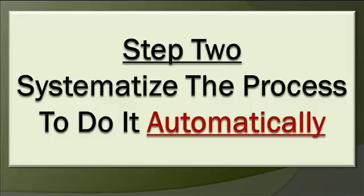This automation, this systemization, is what I call the push button method. Now you're automated — you can walk away and your business keeps going without you. Now you have a business. Now it's time to move on to step three. Making money and having a business are great — they can change your life, give you the things you want, and allow you to give a good life to the ones you love. But what if you want to get rich? Making a few hundred thousand a year is great and you can do that with my system.